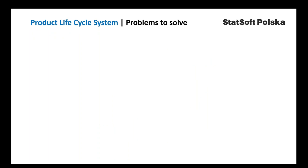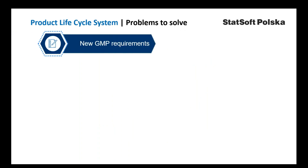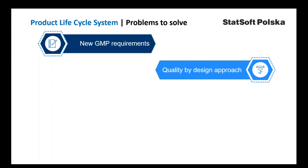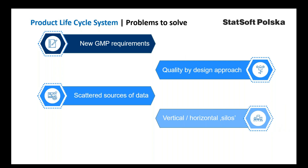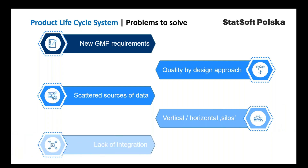The system was developed to address problems related to implementation of new GMP requirements as per Annex 15, process development according to the Quality by Design approach, scattered data sources related to process performance and product quality, and barriers between departments and lack of integration of validation life cycle status.